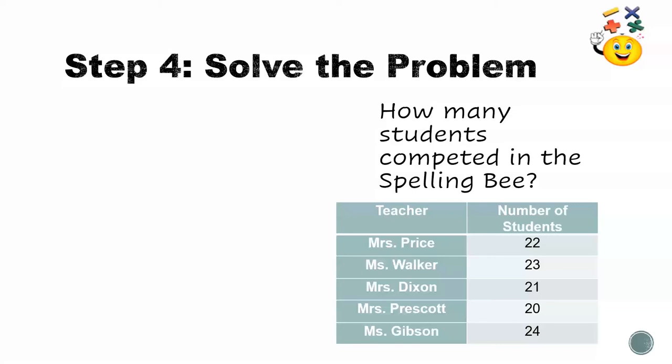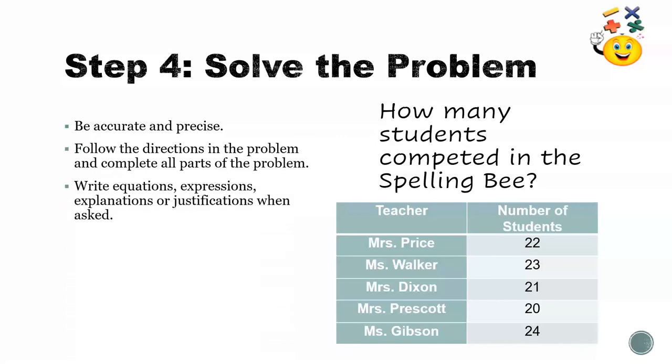When we solve a math problem, it's important to be accurate and precise. We want to make sure that we follow the directions and solve all parts of the problem. We want to make sure we show our thinking with an equation, explanation, or justification. And we want to make sure that we use correct math vocabulary, symbols, and numbers.